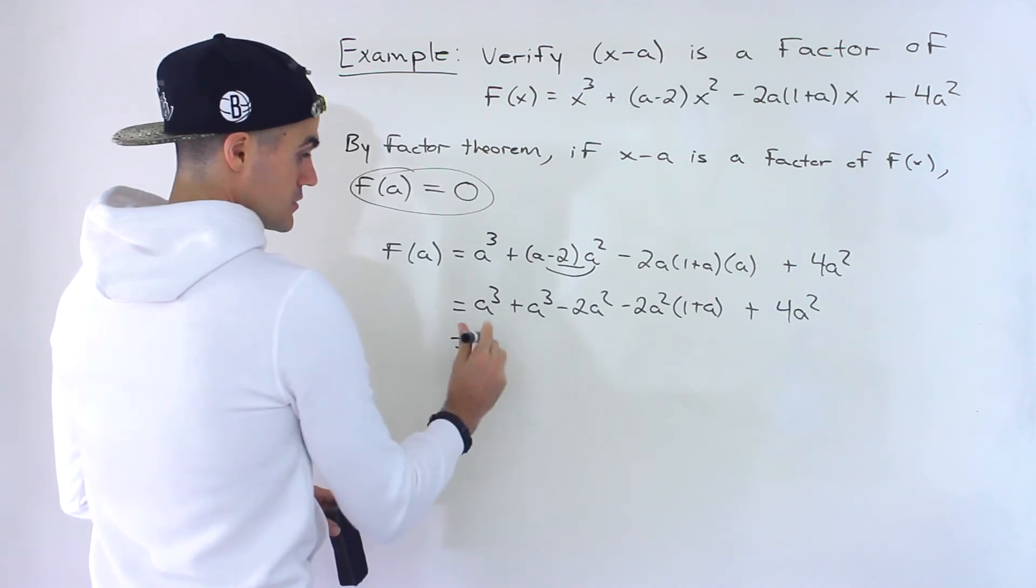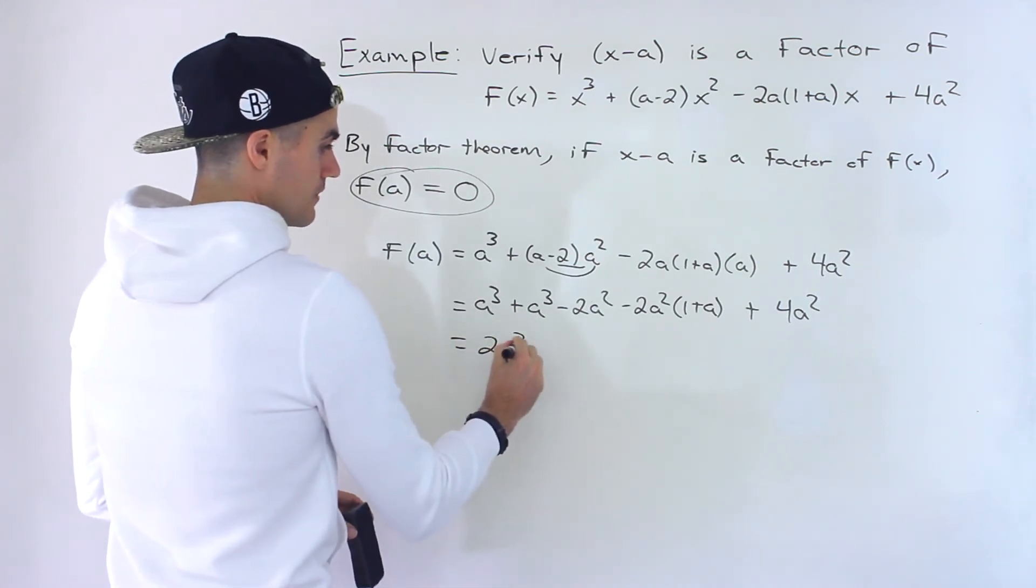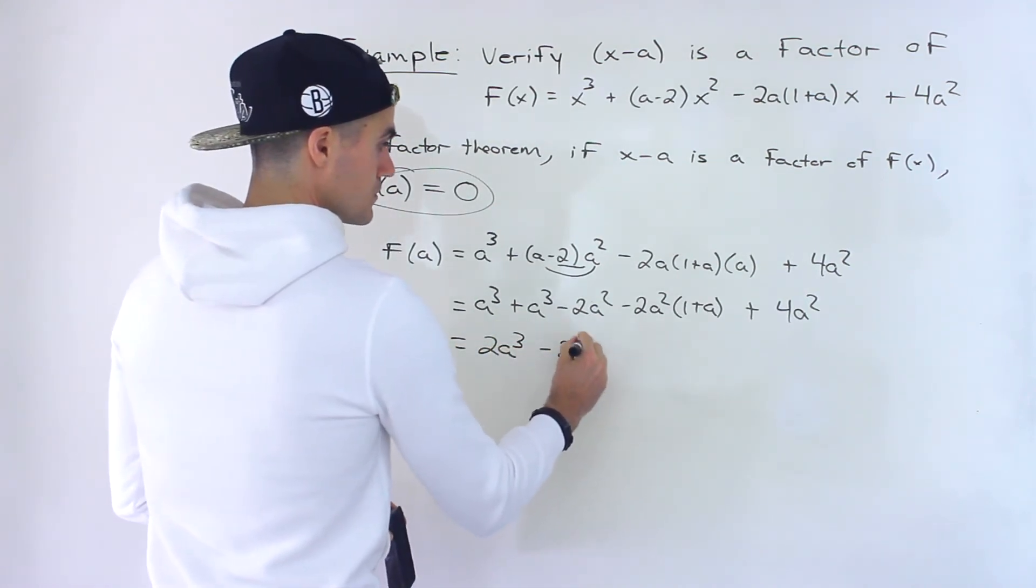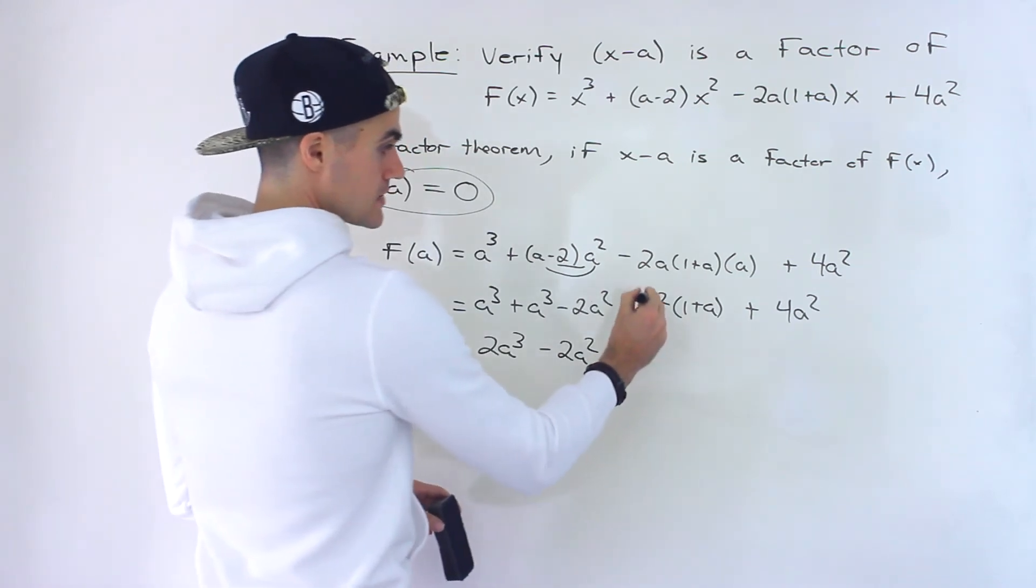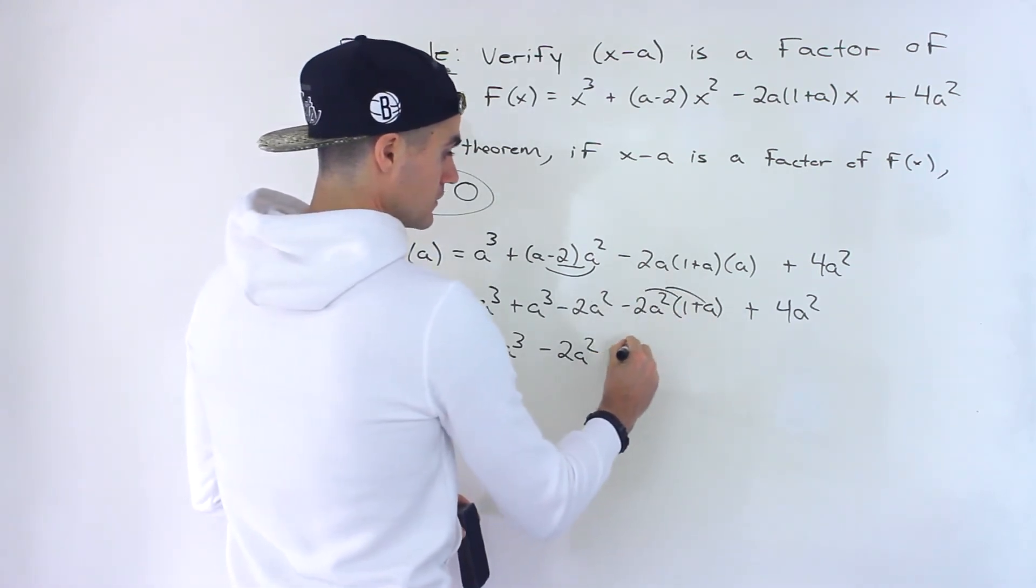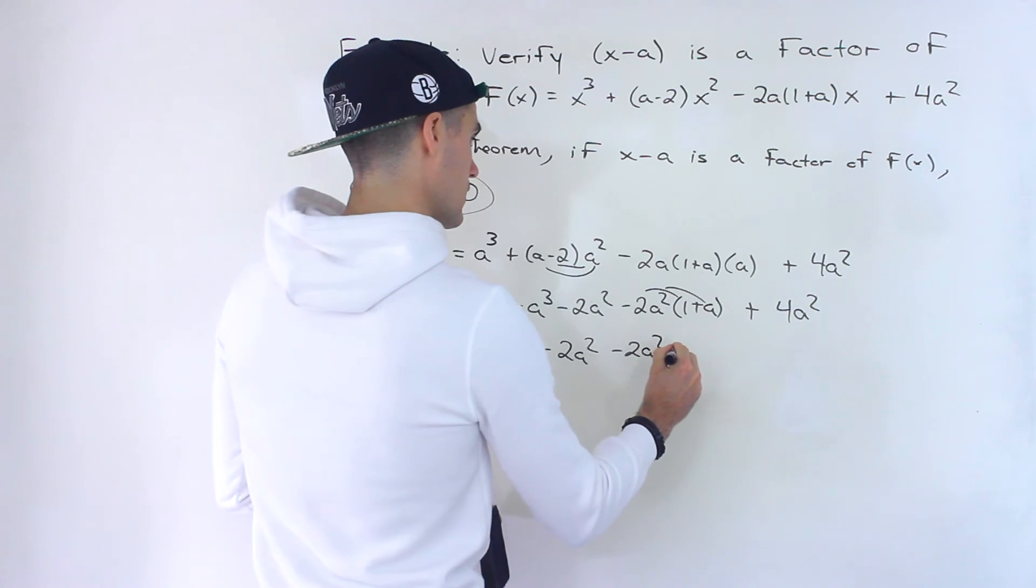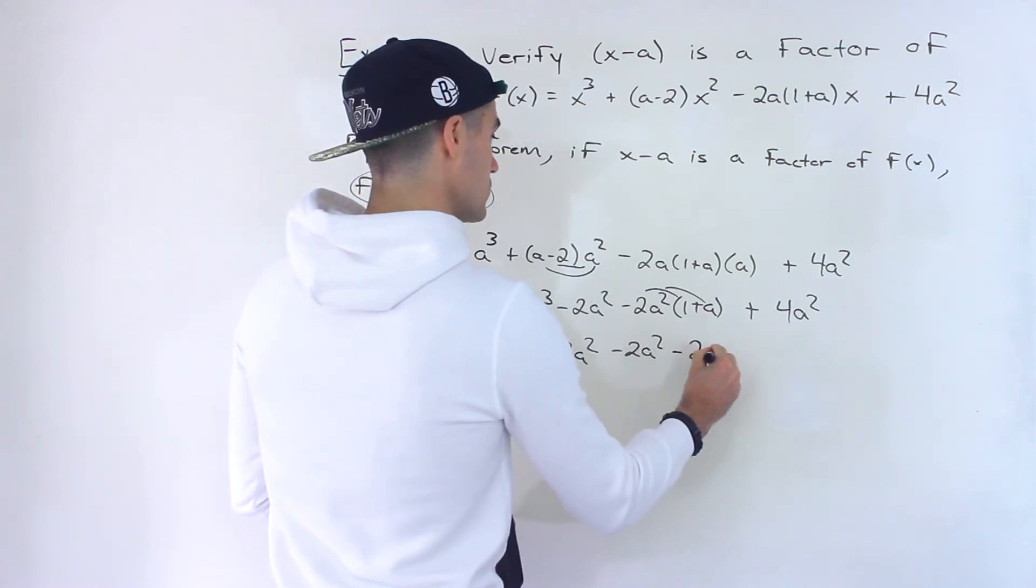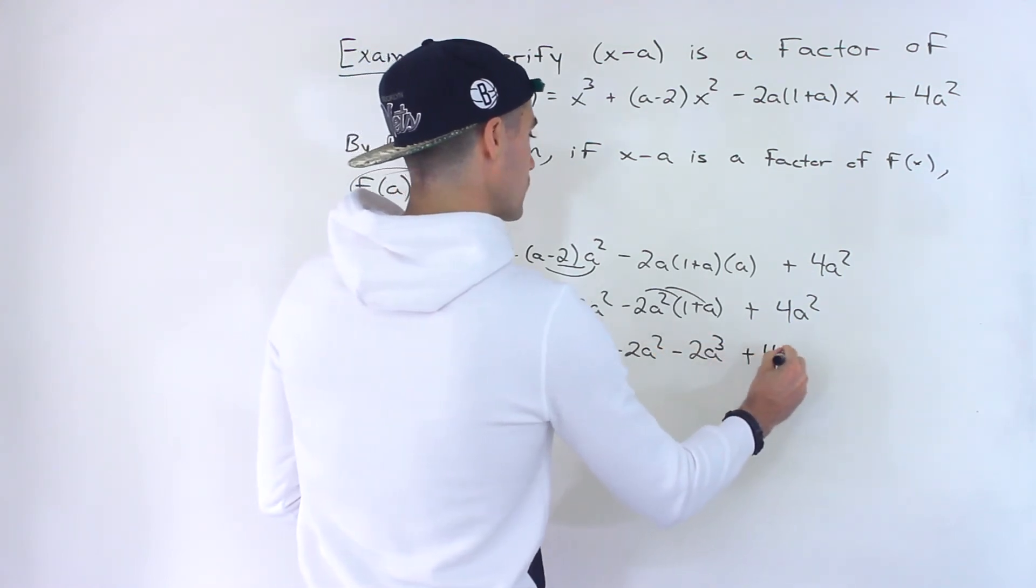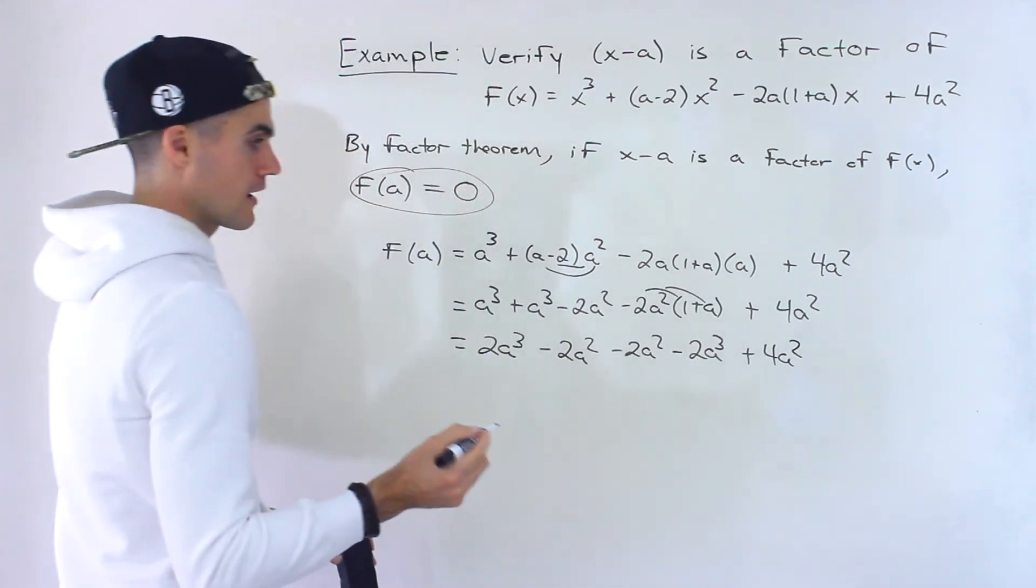So simplifying this, notice these two are like terms, so I'm going to add them minus two a squared. This I'm going to distribute in the bracket, minus two a cubed, plus four a squared, like that.